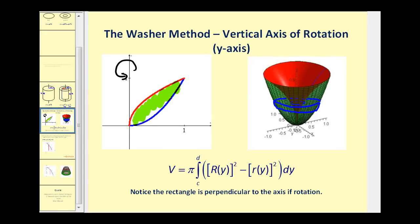The key to setting up the integral is to consider a representative rectangle bounded by the two functions that would represent one washer. The rectangle must be perpendicular to the axis of rotation. Since the width or height of this rectangle is delta y, we will have to integrate with respect to y.